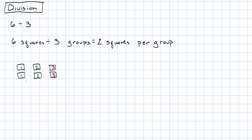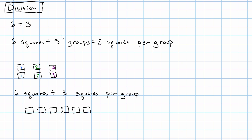There's another way I can think about this problem. Instead, I can think of this as six squares, and I want to split them up so that I have three squares per group. So again, six squares. We'll say these three squares are group one — three squares per group. And these three squares can be group two — three squares per group. One, two, three squares in group one. One, two, three squares in group two.